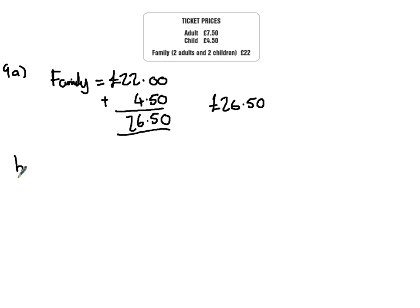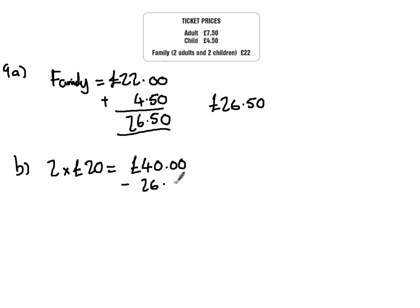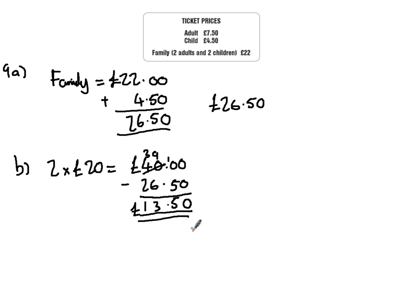Mr. Harris pays with two £20 notes — how much change should he get? 2 times £20 is £40. We take off £26.50. 10 take 5 is 5, 9 take 6 is 3, and 3 take 2 is 1. The answer is £13.50.